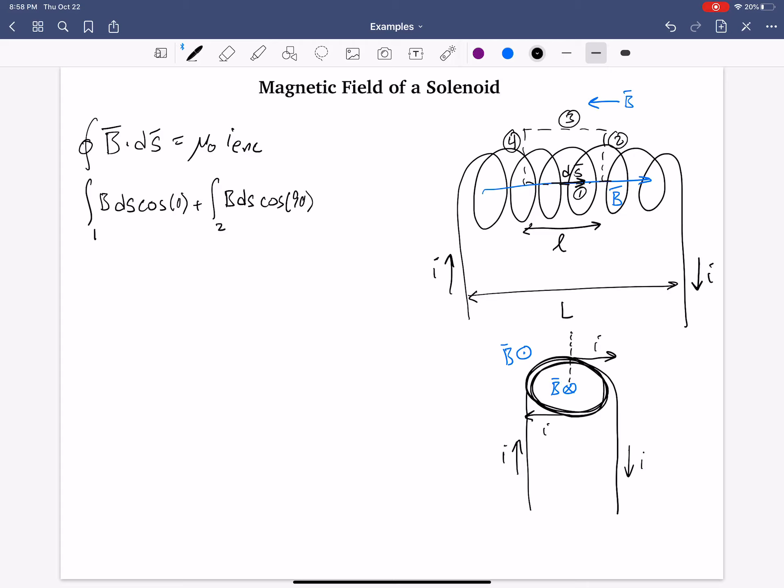And we need to add the integral for segment 3, B, dS, cosine. Now the dS is going back to the left, but the magnetic field is still remaining, pointing to the right. So that's actually 180, and the segment 4, B, dS, cosine of minus 90. And all of this equals mu naught I enclosed. Okay?